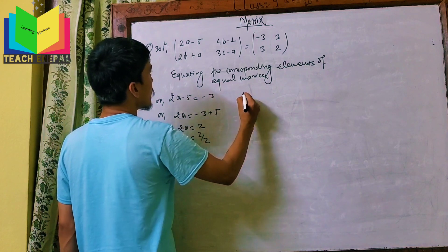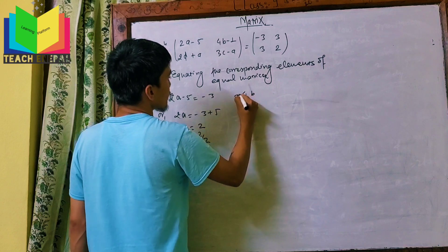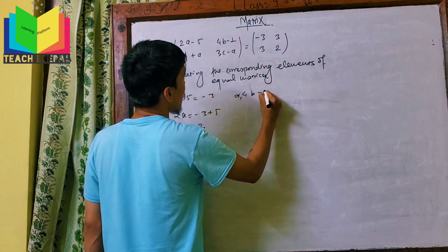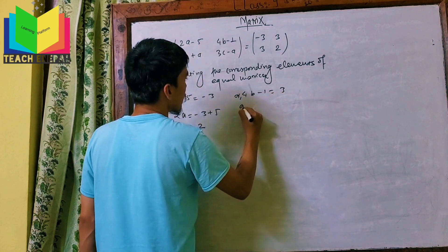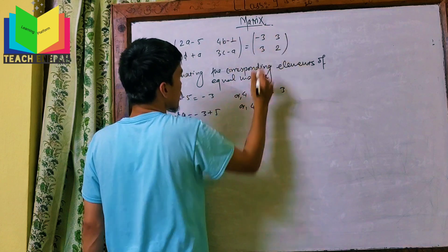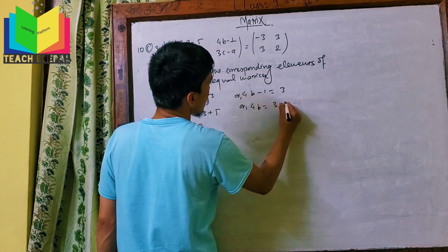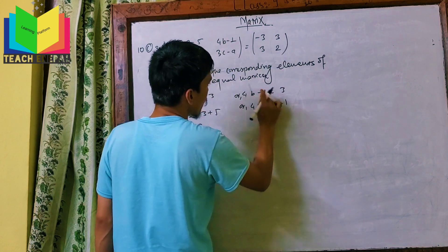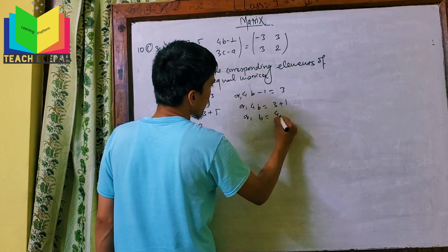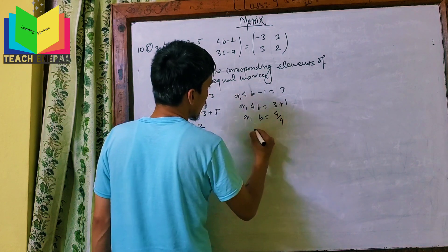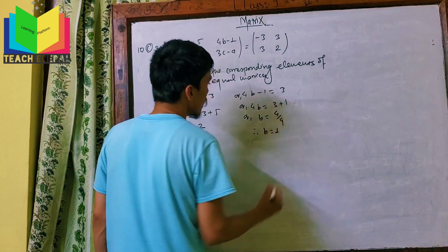From 4B-1 equals 3: 4B equals 3 plus 1, so 4B equals 4, therefore B equals 1.